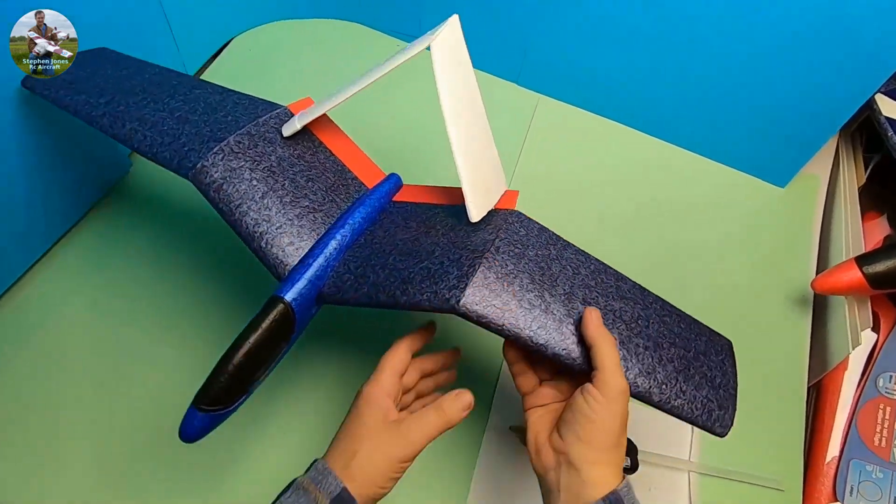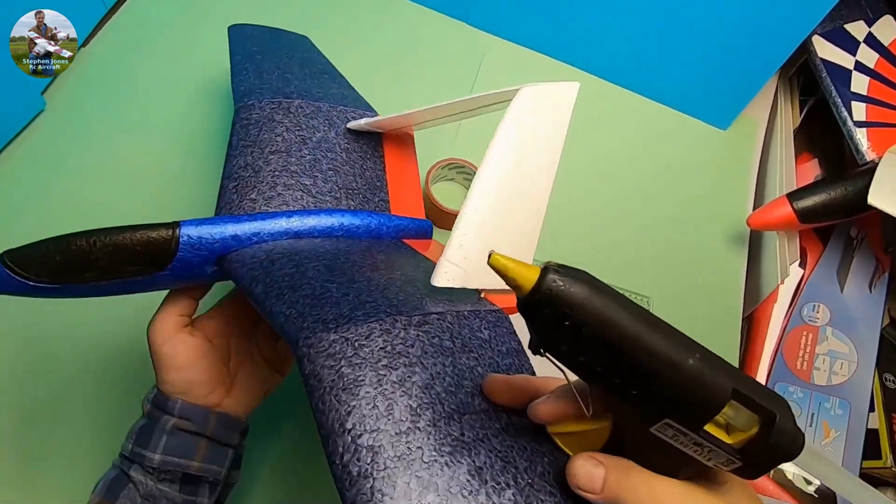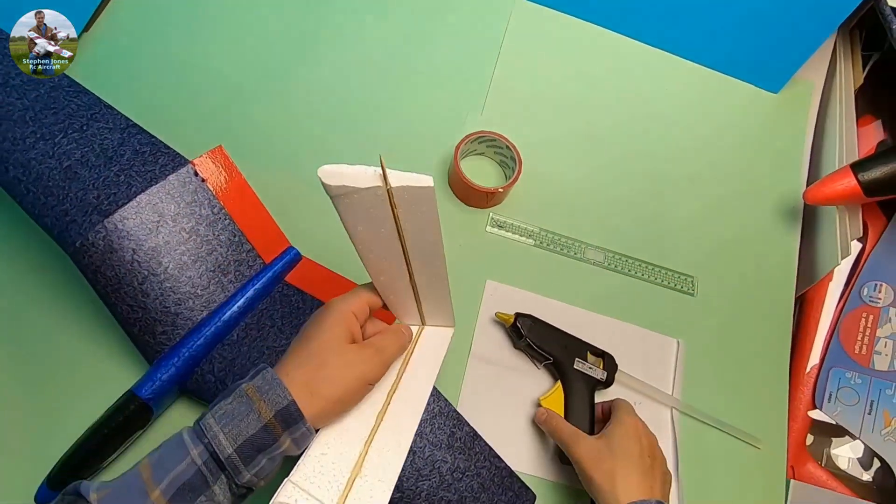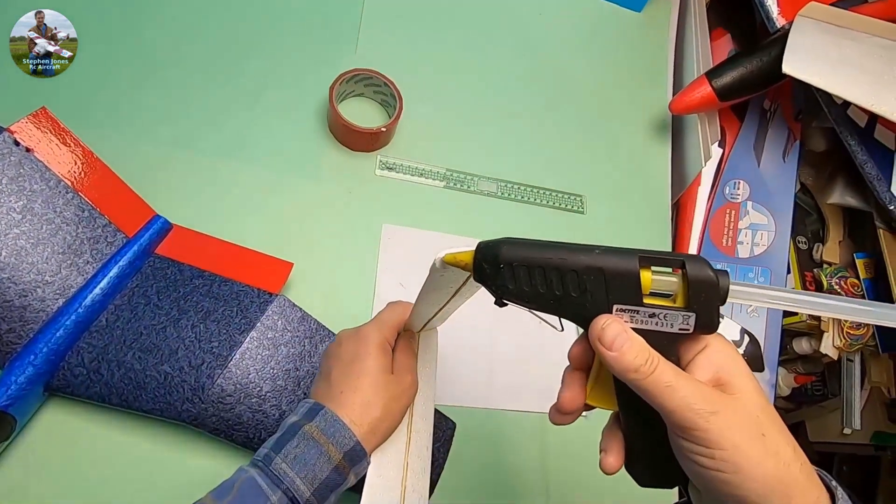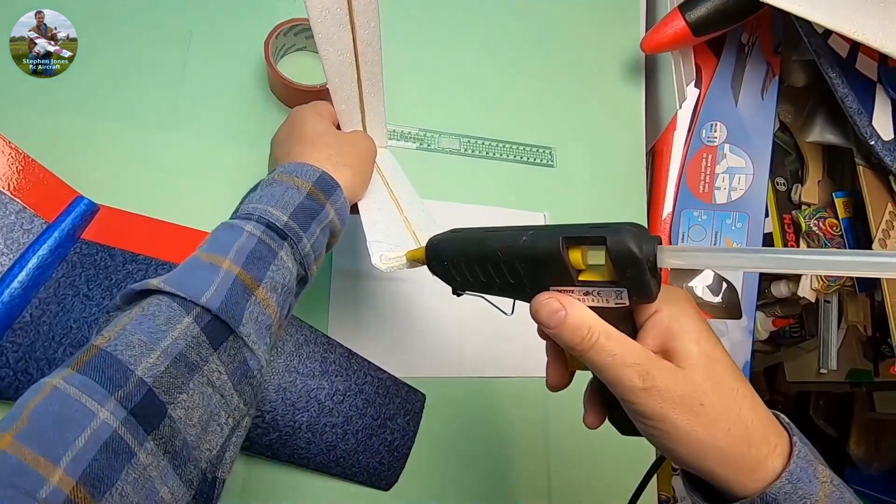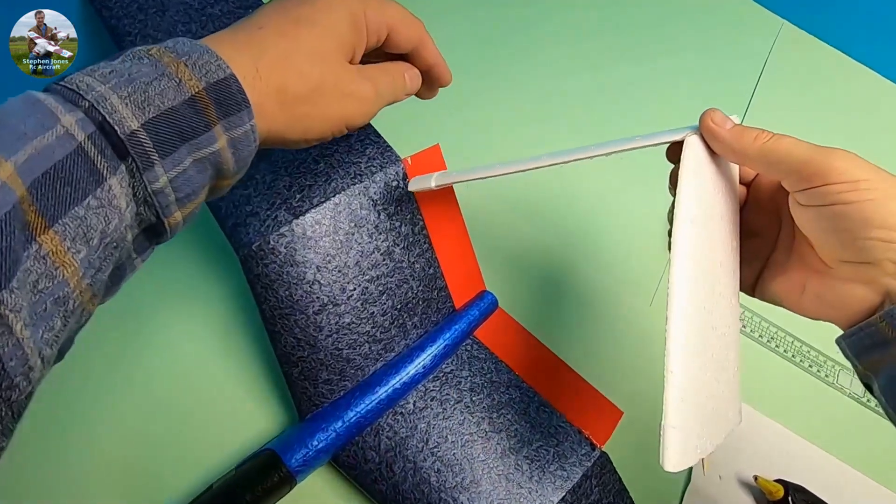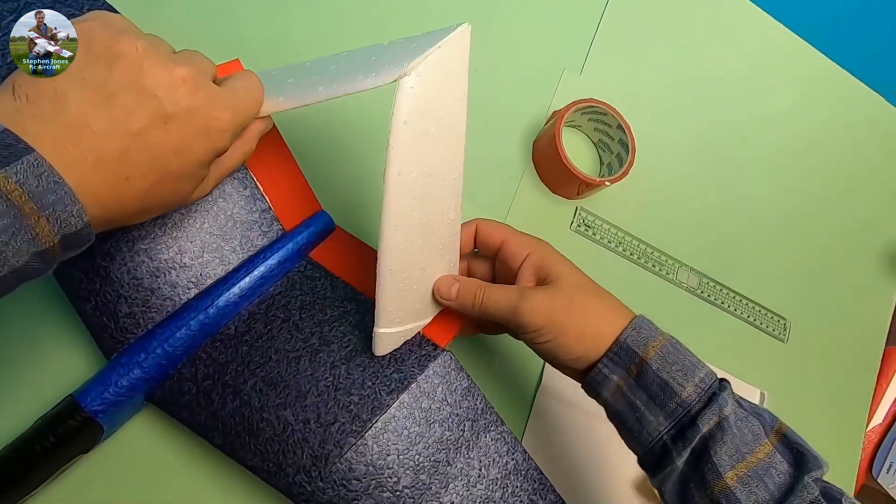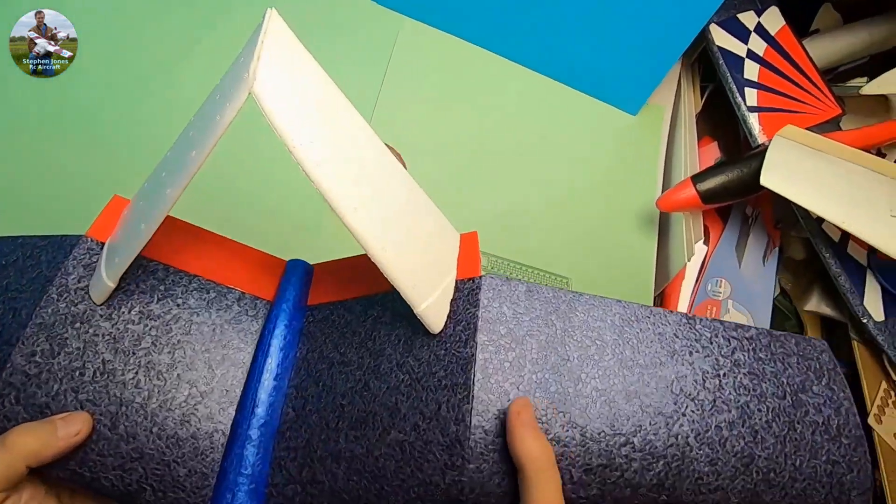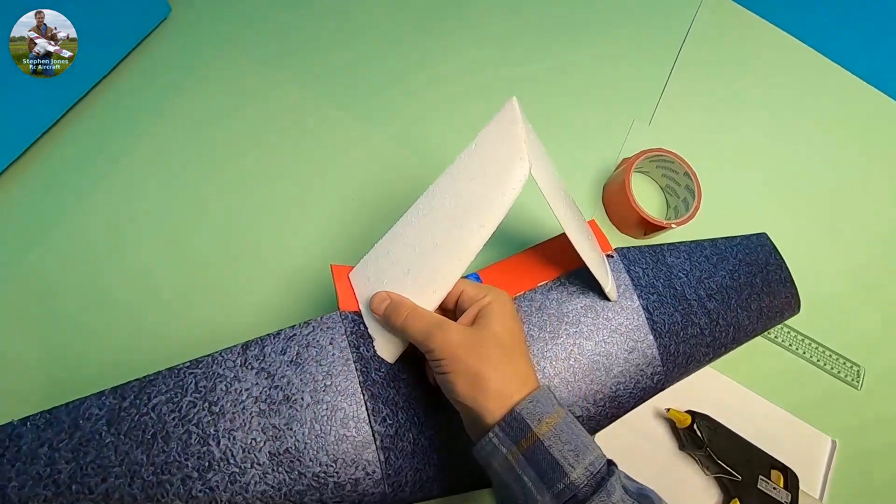I'm going to use some hot melt glue to glue that on now. This is one of those things you've probably had to do quite quick. Hopefully I don't make too much of a mess of it. There we go.